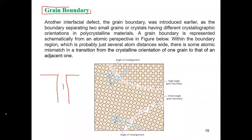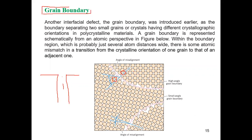Looking at the grain boundary region, each unit cell has a particular orientation direction in one grain, and a different orientation in the adjacent grain. The interruption of atomic arrangement between grains is the grain boundary. There are high-angle grain boundaries and small-angle grain boundaries.